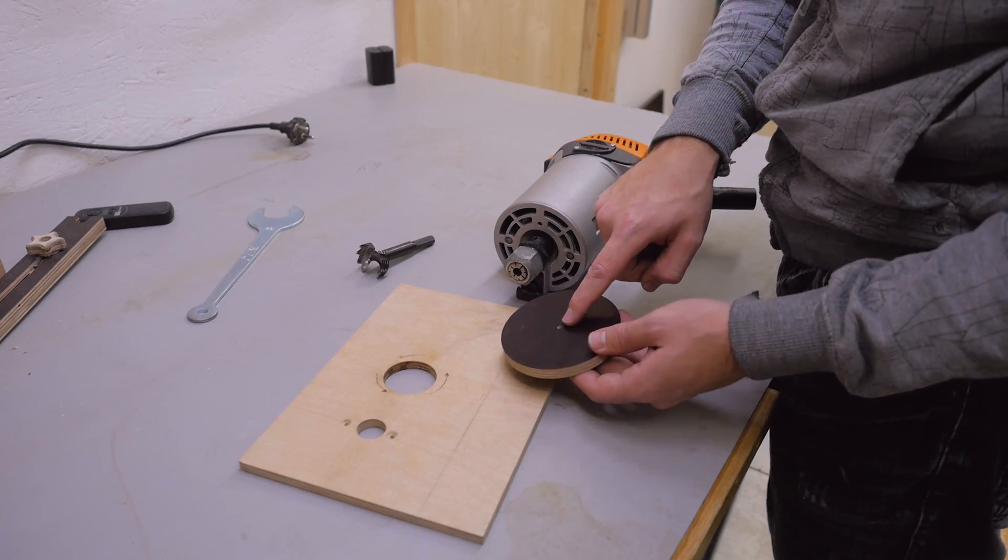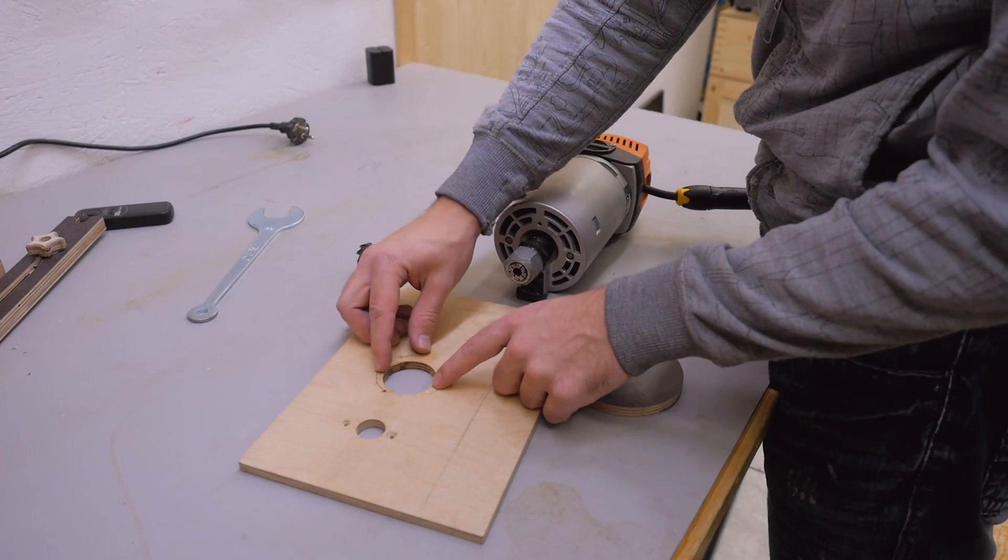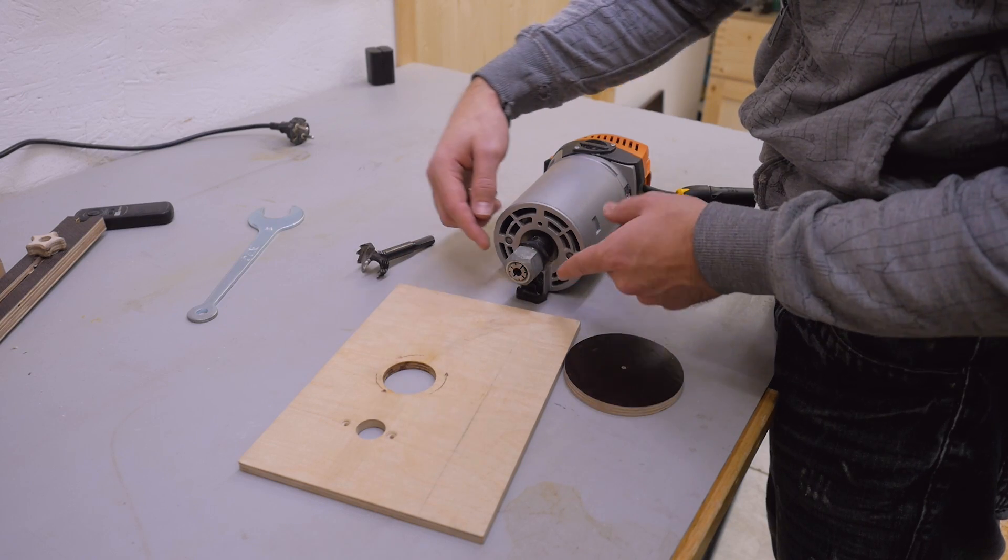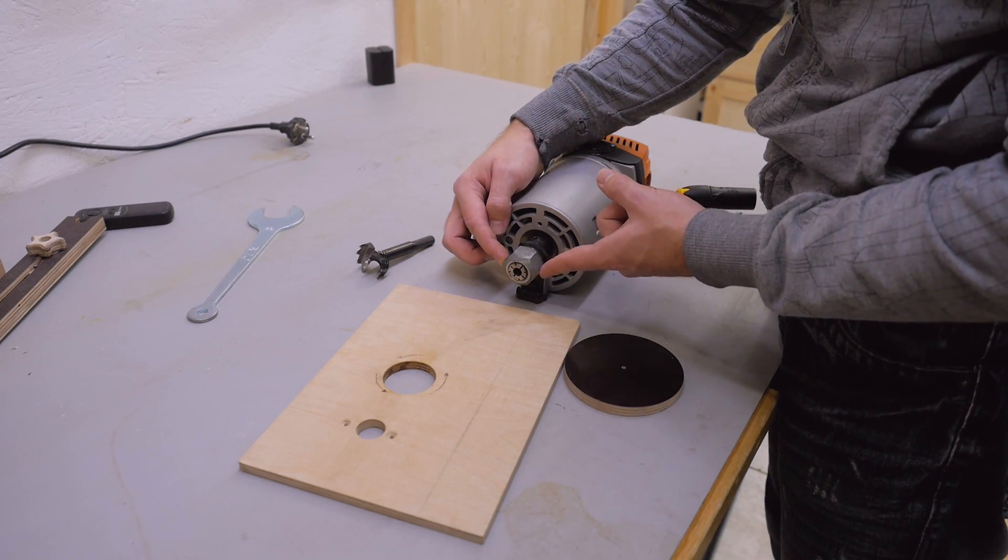Now the hole for the router bits in the insert plate. On the old one I often wished I had made it smaller, so this time I make it just as big so that the nut of the router can fit through.